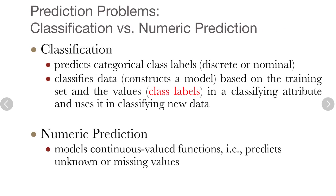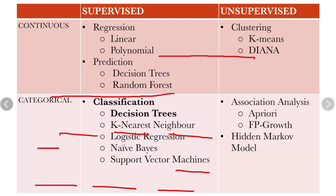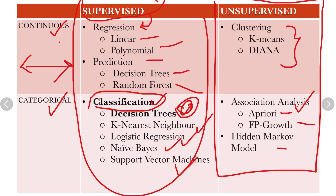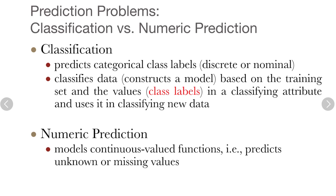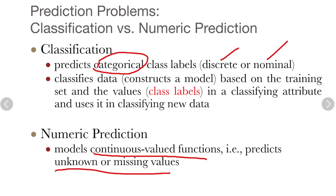There is an important difference between classification and numeric prediction. As seen in previous slides on supervised learning, classification predicts categorical class labels — they must be either discrete or nominal. Numeric prediction, on the other hand, models a continuous value function — for example, predicting unknown or missing numeric values.